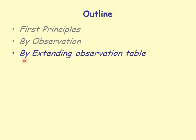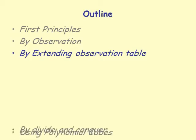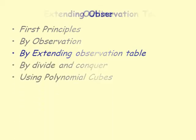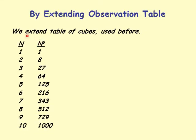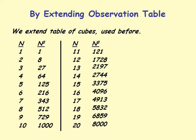Next section here. Now we would extend the observation table. We used the first 10 cubes. Now we would extend that a little further and have more entries in my cubes table. This is the table we used before of the first 10 digits, cubes of the first 10 numbers here.